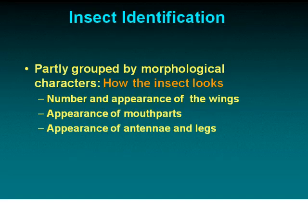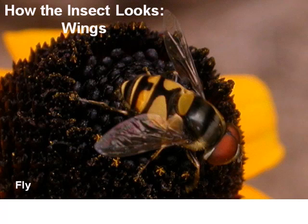Insect identification is partly grouped by morphological characters — how the insect looks. Three especially important features are: the number and appearance of the wings, the appearance of the mouth parts, and the appearance of the antennae and legs. Here's a good example: we can tell this is a fly because even though it has wasp-like coloration, it only has two pairs of wings. For flies, wing venation is extremely important for identification and is one of the main characters I use when identifying a fly.